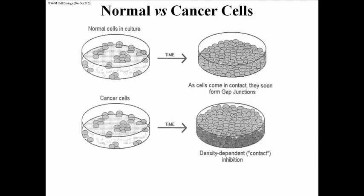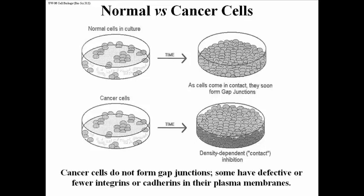Cancer cells, when they come together and fill the bottom of a plate, continue to grow, eventually filling the entire liquid in the plate. They've lost their capacity for contact inhibition. When you study cancer cells, they don't form gap junctions — they may come in contact, but they don't form the normal communicative junctions that would otherwise tell them to stop growing.